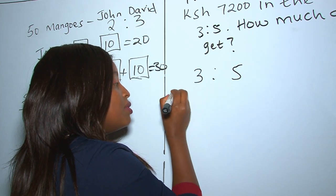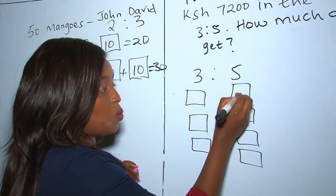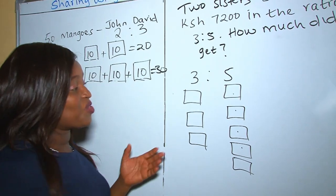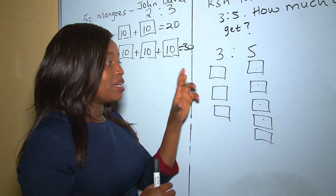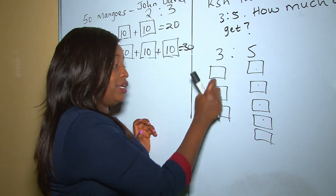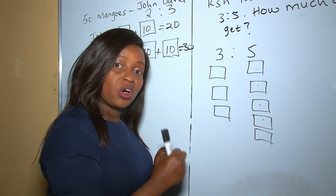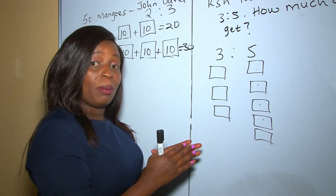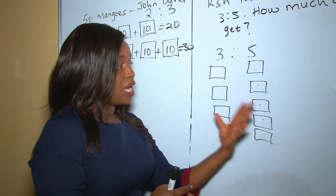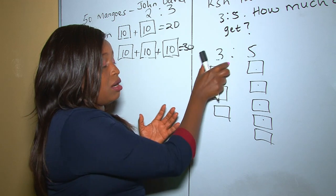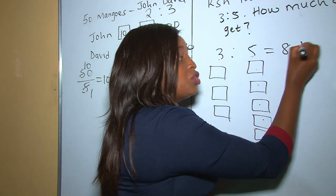The first sister has three portions and the second has five portions. When sharing, we need the total number of parts. Counting all parts together gives us eight. This introduces the concept called total ratio. We get the total ratio by adding the parts: 3 plus 5 equals 8.